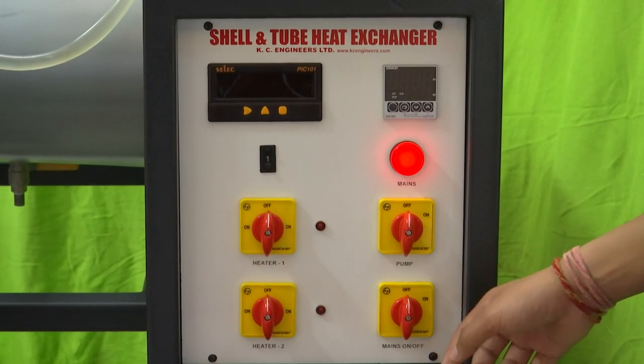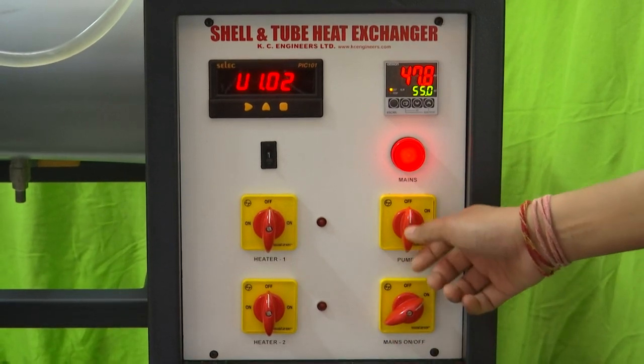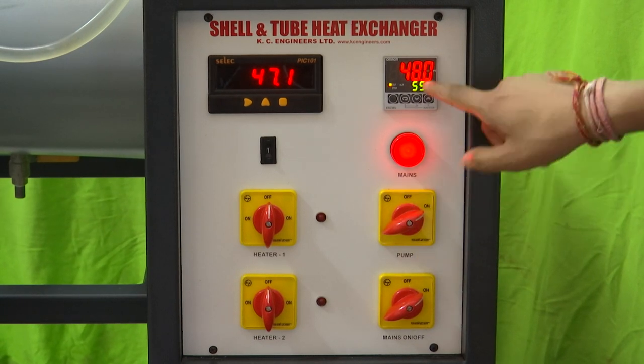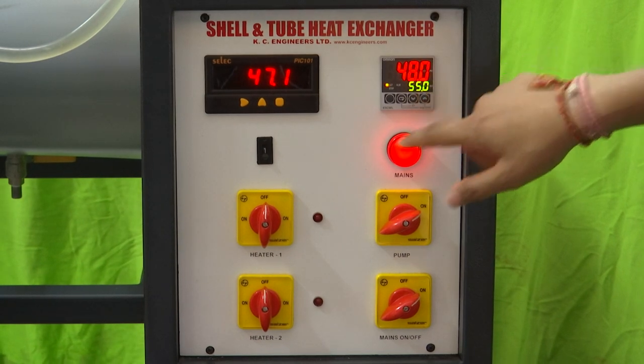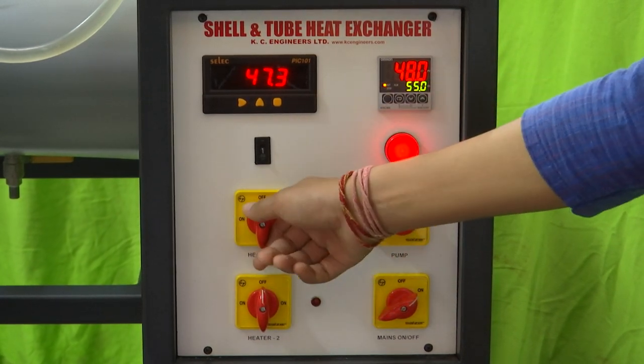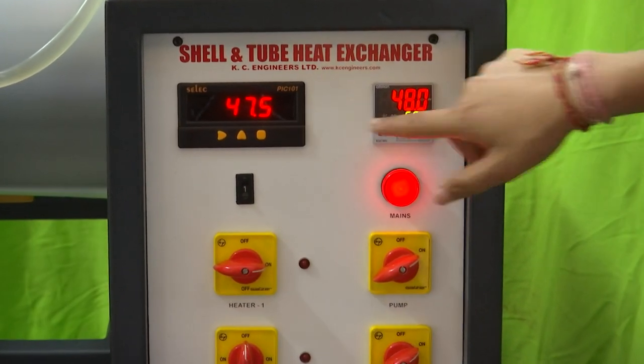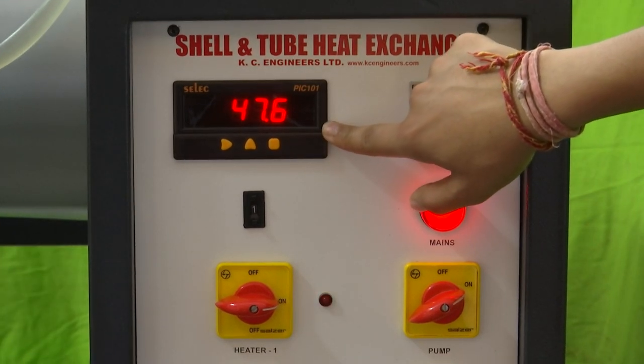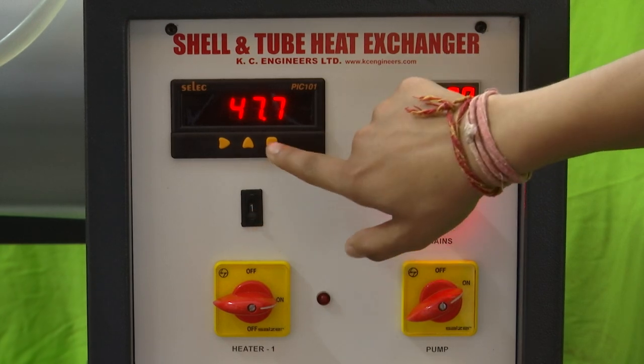First we need to turn on the main switch, then we need to turn on the pump. This is the current temperature in the heating tank and that is the set temperature. We will turn on the heaters. Slowly and steadily the current temperature will reach the set point. This is where the temperature of the inlets and outlets of hot and cold fluids are displayed.